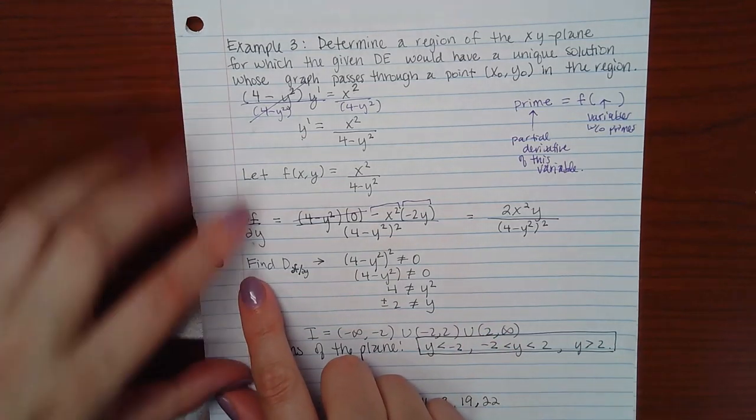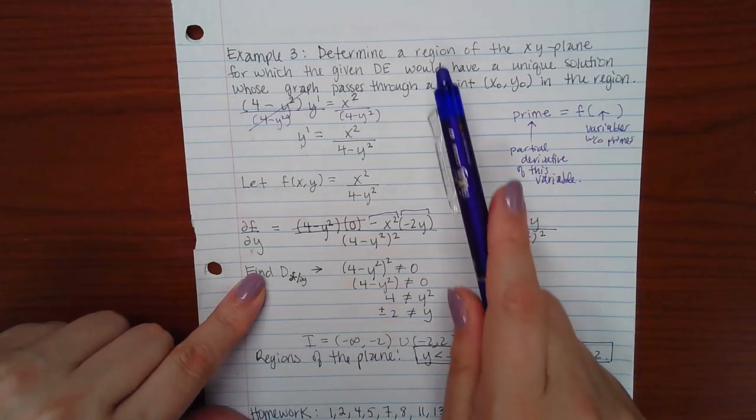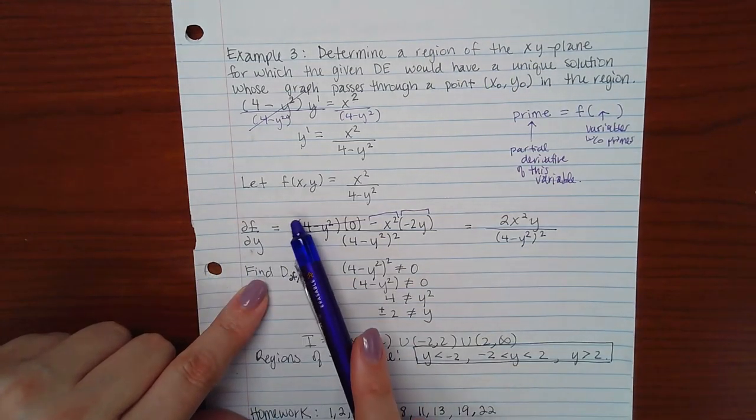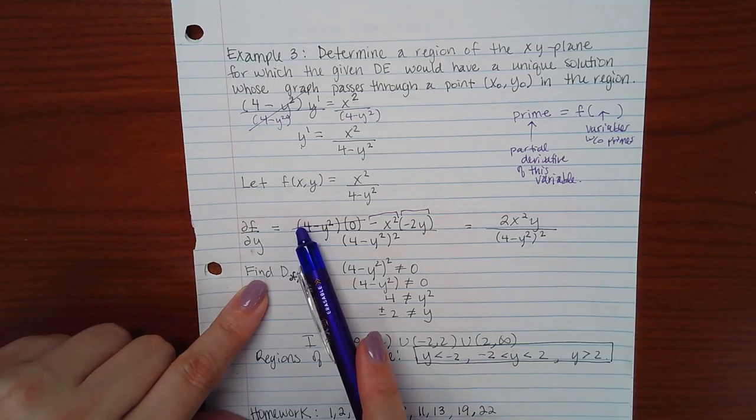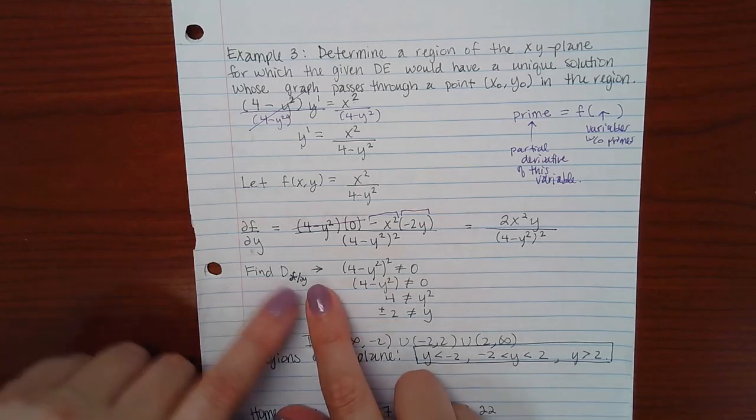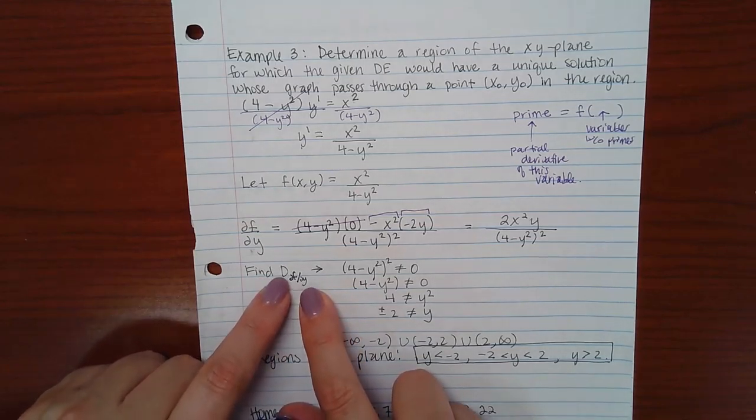So now, in order for me to find the region in the XY plane, I want to find the domain of this partial derivative. That will help me to narrow down my region. So this is just my notation of my domain of the partial derivative.